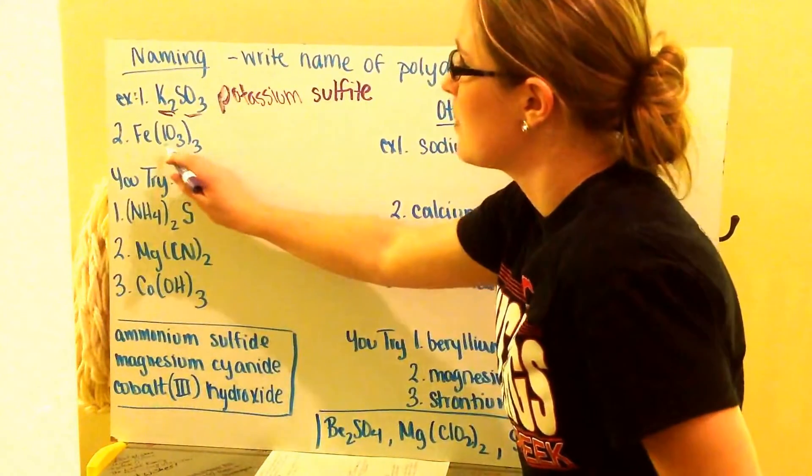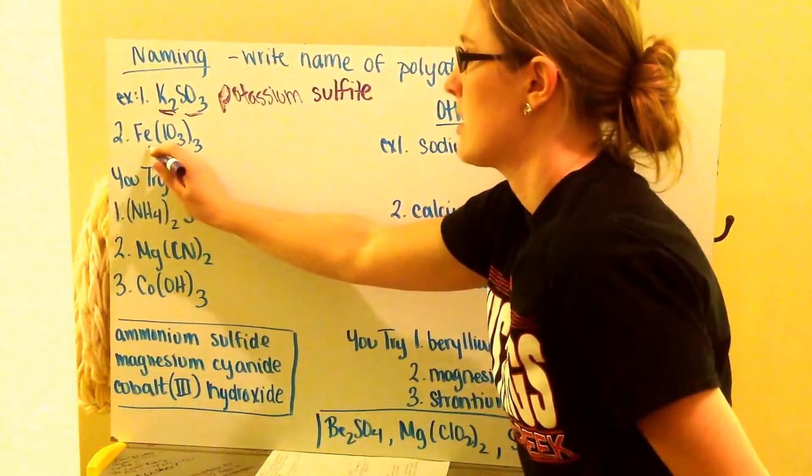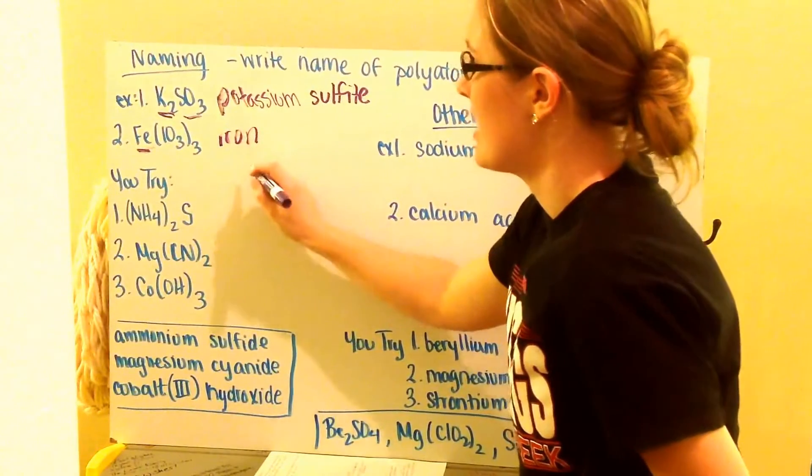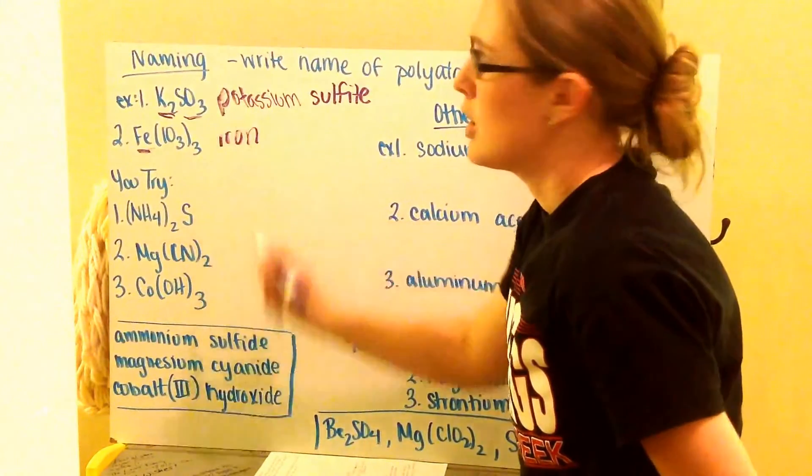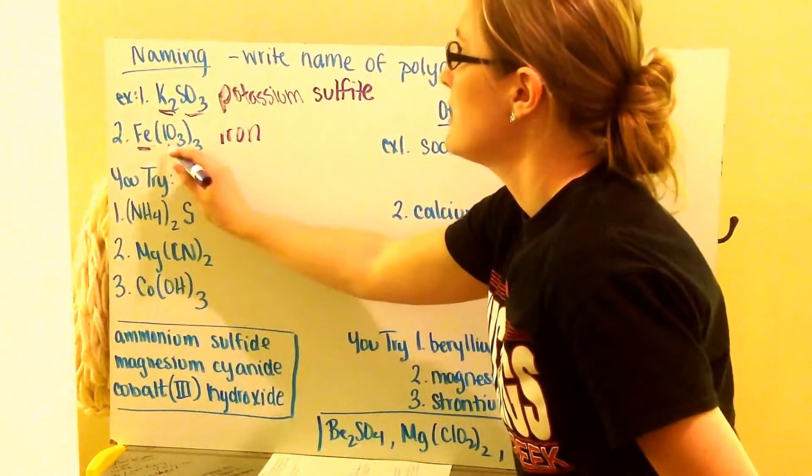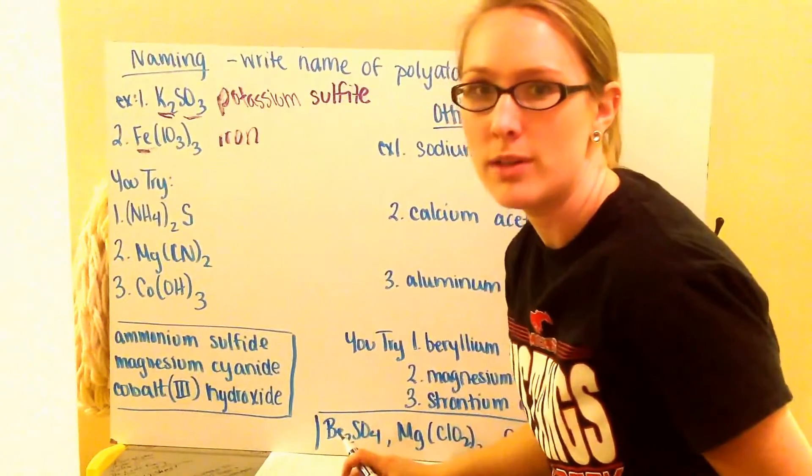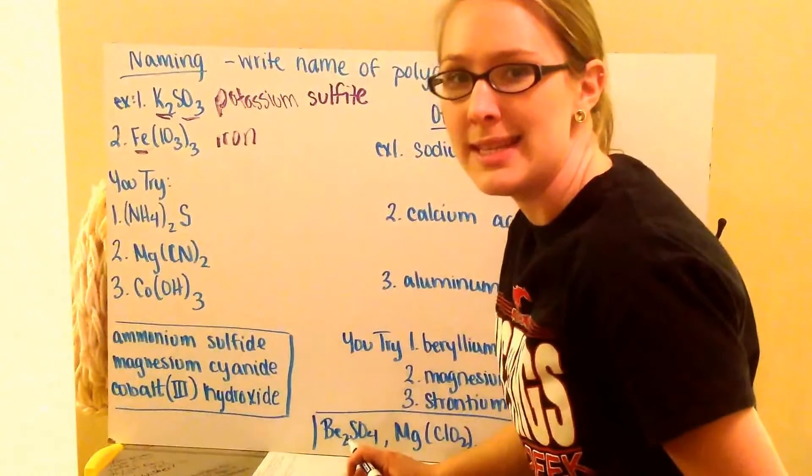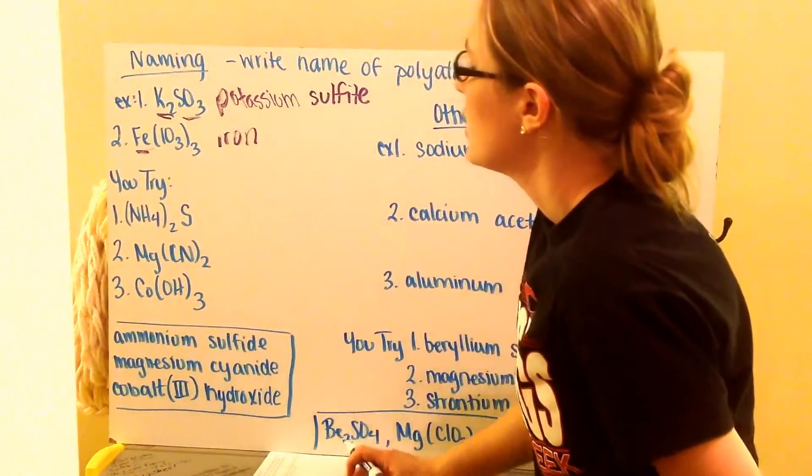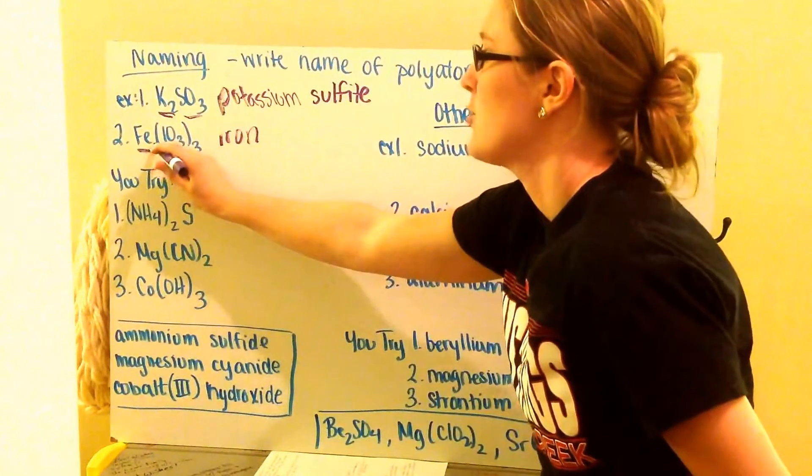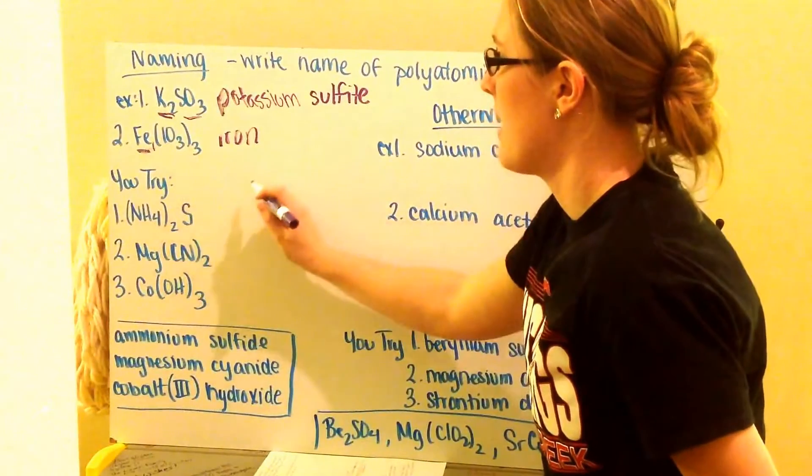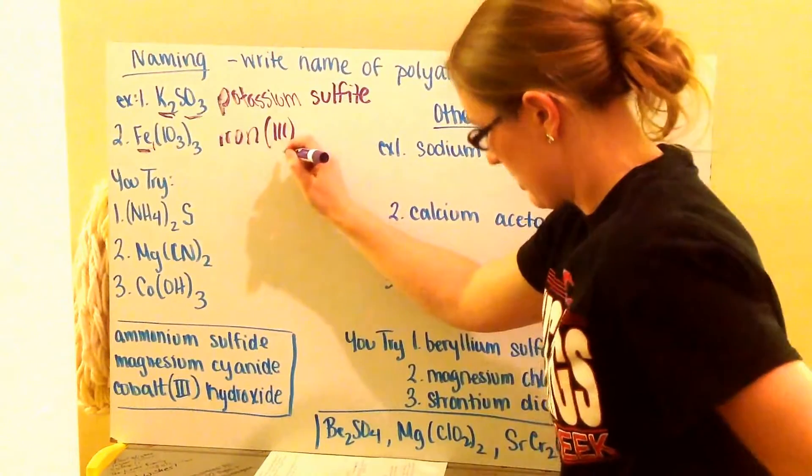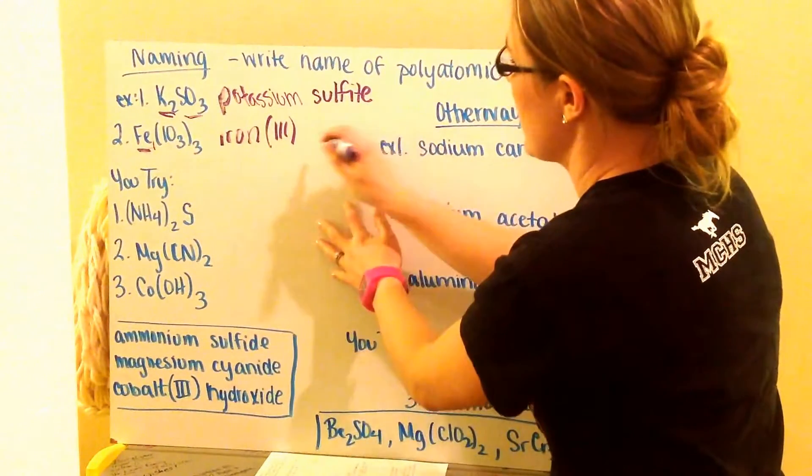Next, here's an example of having parentheses because I have more than one polyatomic. I have my iron here. So I write that first, iron. Now, iron is a transition metal, so I need to indicate what its charge was. What I notice here, I have IO3. If you go on your list, your reference guide, and find IO3, you'll notice that that's iodate. So, iodate has a negative one charge, which is why I have one iron here. My iron had to have a positive three charge. So I have to write iron (III), and then I write my polyatomic ion, which is iodate.